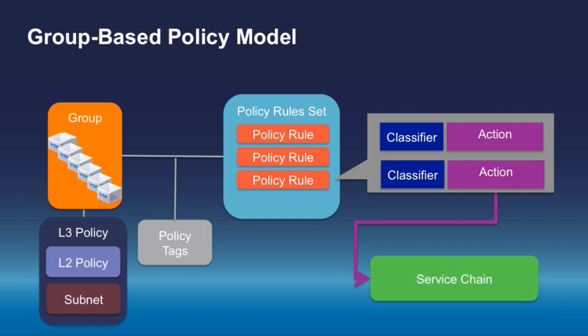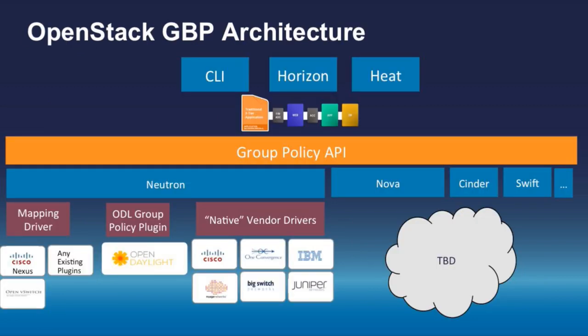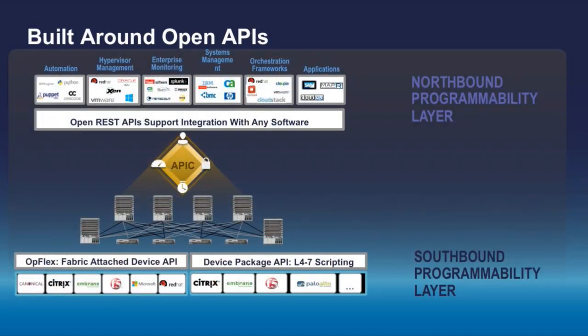Here is an overview of the architecture. The group policy API sits between Neutron, Horizon, Heat, and the CLI of OpenStack — it's a higher level up. From there, Neutron connects to your mapping driver: if you have a Cisco device you use a Cisco driver, or other vendors use their drivers. Group policy is a level of abstraction above that, and it can work with a mixture of different vendors as well.